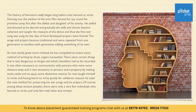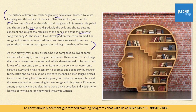Let's find out by skimming the passage. Looking at the first passage, we can observe that the history of literature began long before man learned to write. Dancing was the earliest of the arts — man danced for joy around his primitive campfire after defeating his enemy. He yelled and shouted as he danced, and gradually the yells and shouts became coherent and caught the measure of the dance, and thus the first war song was sung.